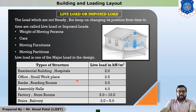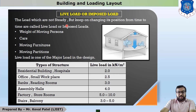The second load is live load. This person is moving continuously, so their load is considered as live load or imposed load. The load which is not remain steady but keeps changing its position from time to time is called live load or imposed load. The loads to be considered in live load calculation are: weight of moving persons, cash, moving furniture, and moving partitions.